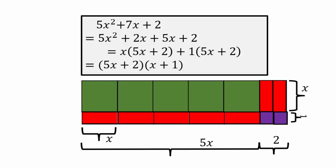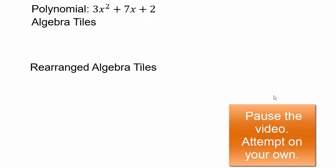So you can see how factor by grouping is reflected in the picture — what is actually happening. We'll worry about how to find these factors without having the pieces in a little bit. First, let's make sure that you're able to use algebra tiles to do these problems. Pause the video here and see if you can first get the correct amount of tiles and then rearrange them to make a rectangle out of all the pieces. Go ahead and play with it.